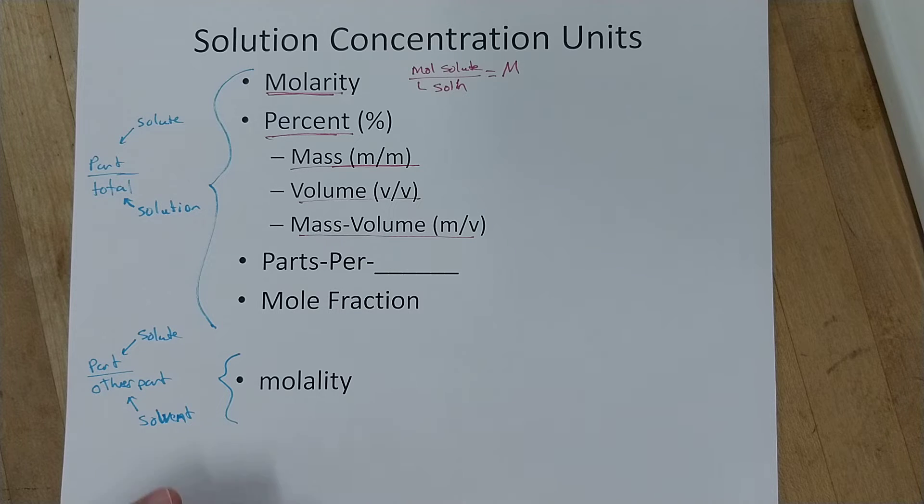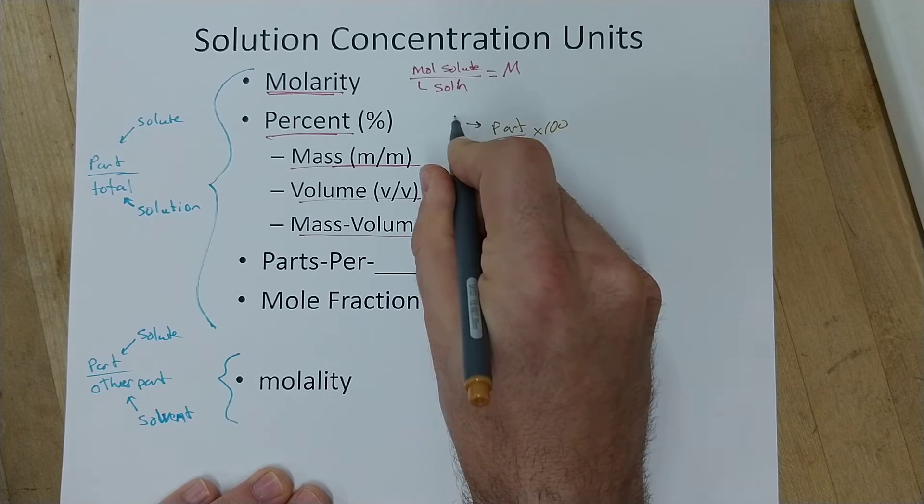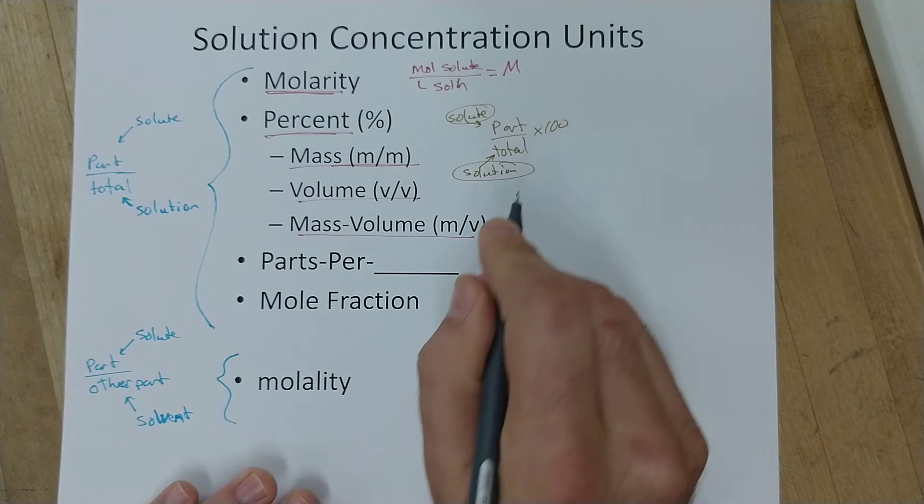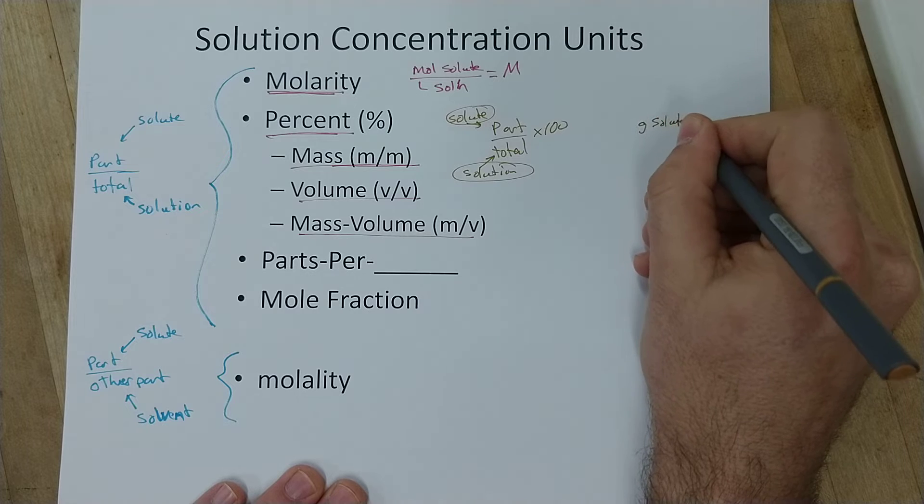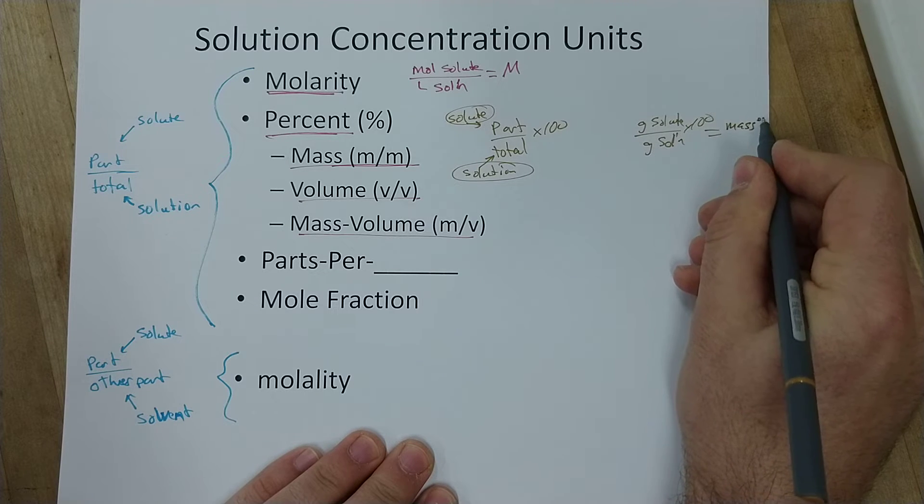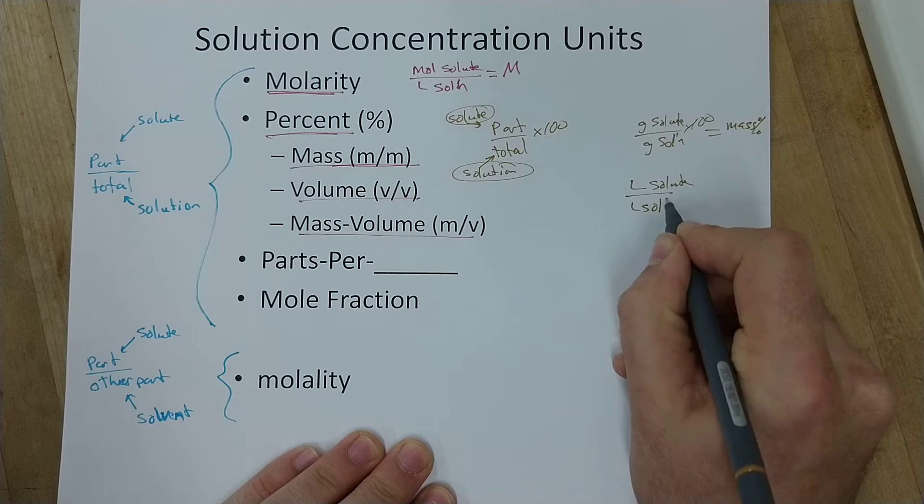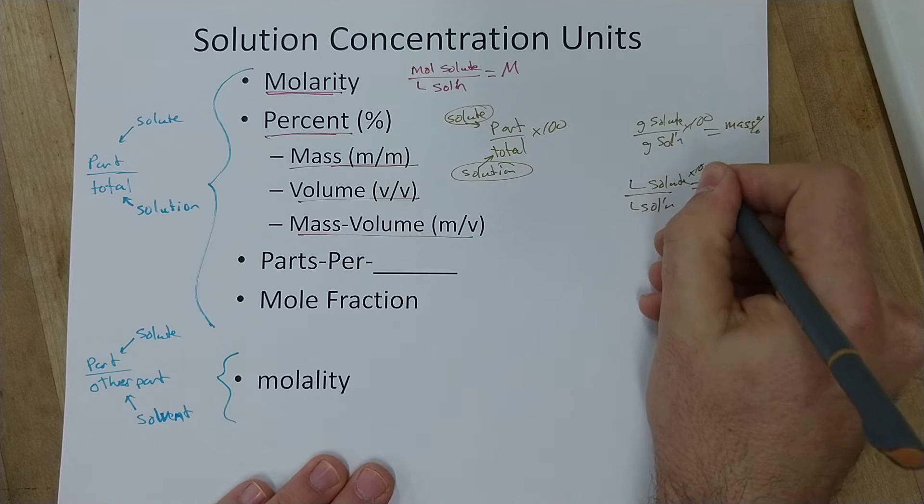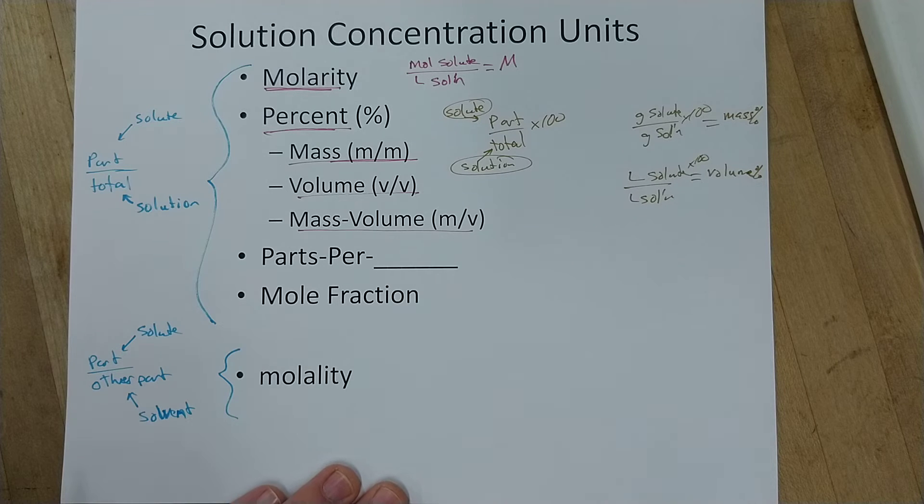Percent is just part over total times 100. So the part is the solute. The total is the solution times 100. And this could be in any of these units. This could be grams of the solute over grams of the solution times 100 would give you a mass percent. Or it could be liters of the solute over liters of the solution would give you a volume percent. It all works the same way. Just part which is the solute over total which is the solution times 100 equals the percent.